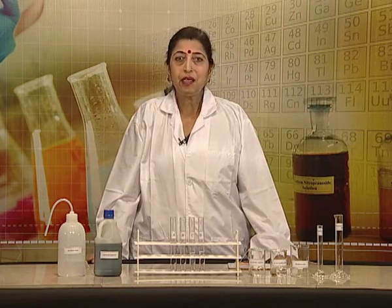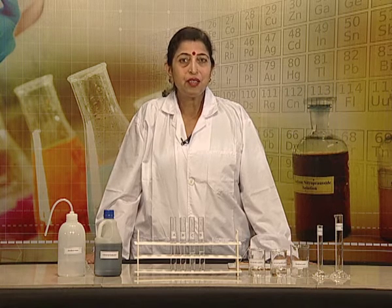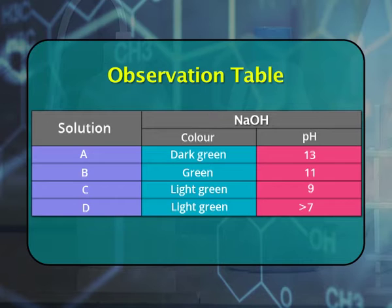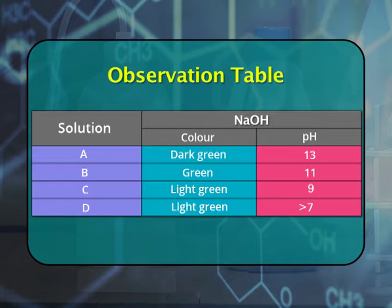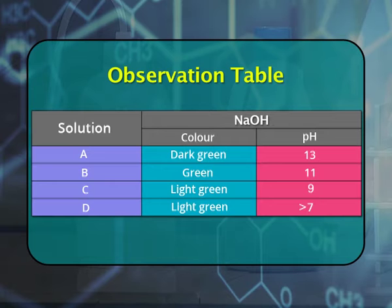We noted down all our readings in our observation table. Solution A: dark green color, pH value between 14 and 12, approximately 13. pH paper gives us the approximate pH value of a given solution. With solution B, we got green color, corresponding pH value somewhere between 10 and 12, taken as 11. With solution C, the color was light green and pH value came out to be 9. With solution D, the color developed on pH paper was light green, matching well with pH value 7.